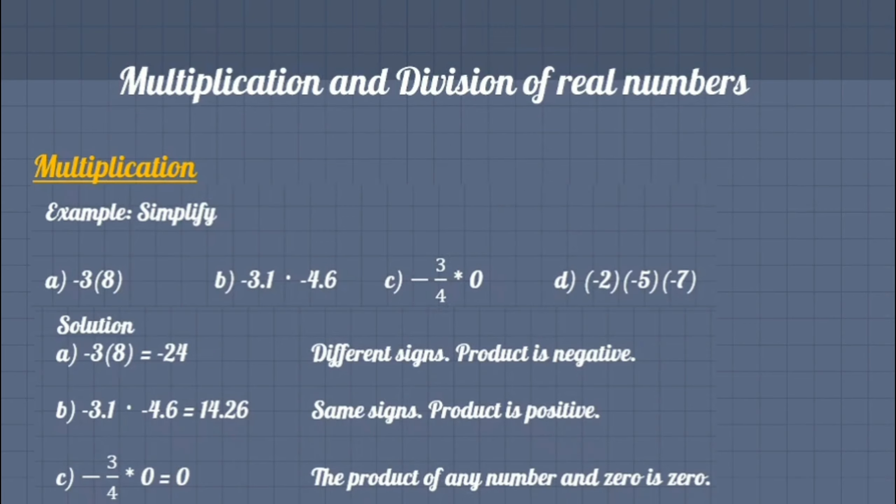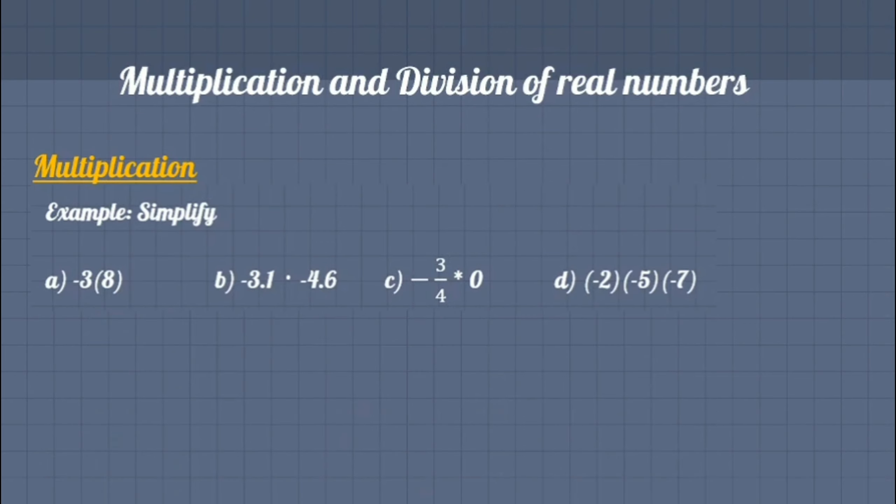In last example we have more than two real numbers. To simplify such expression we first make pairs to apply multiplication from left to right, just like that.